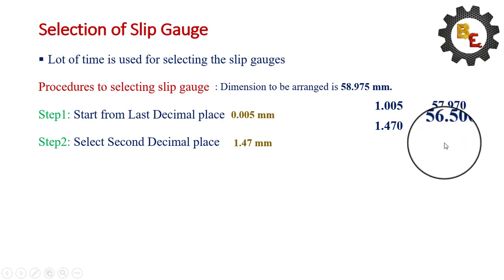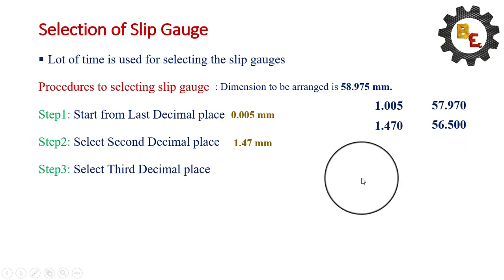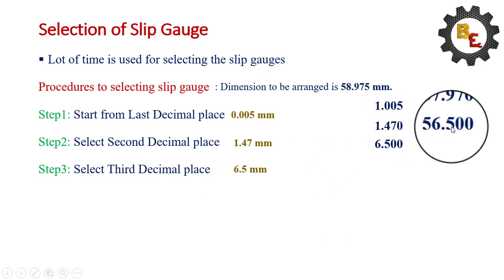Step 3. Select the third decimal place. Now, the third decimal place is 5. So, 6.5. Now we have to choose the gauge of 6.5 mm. Now, reduce the value from this 56.5. The remaining value is 50 mm.